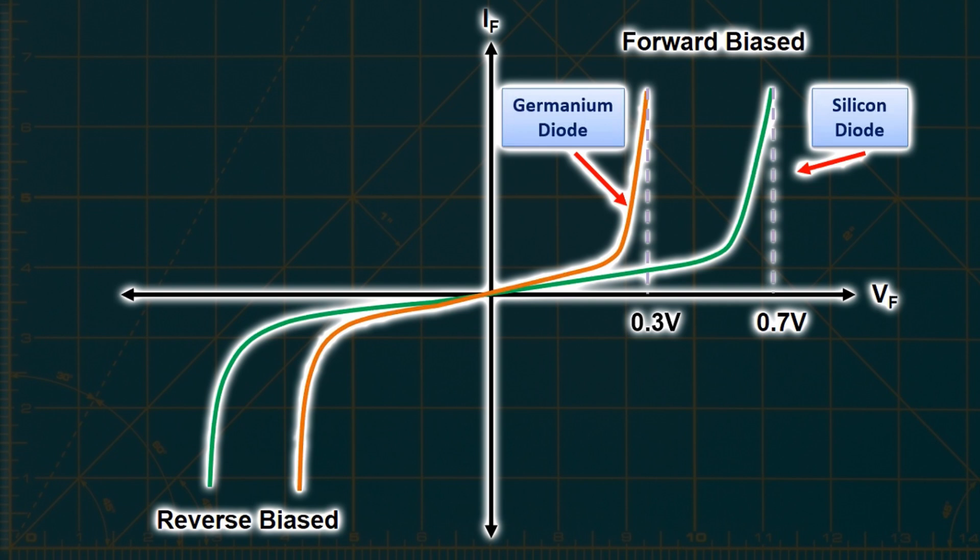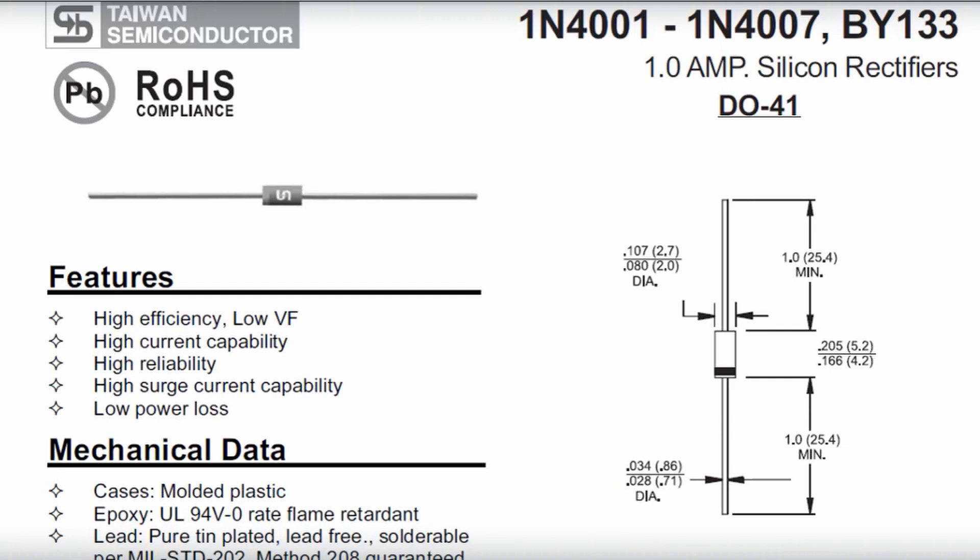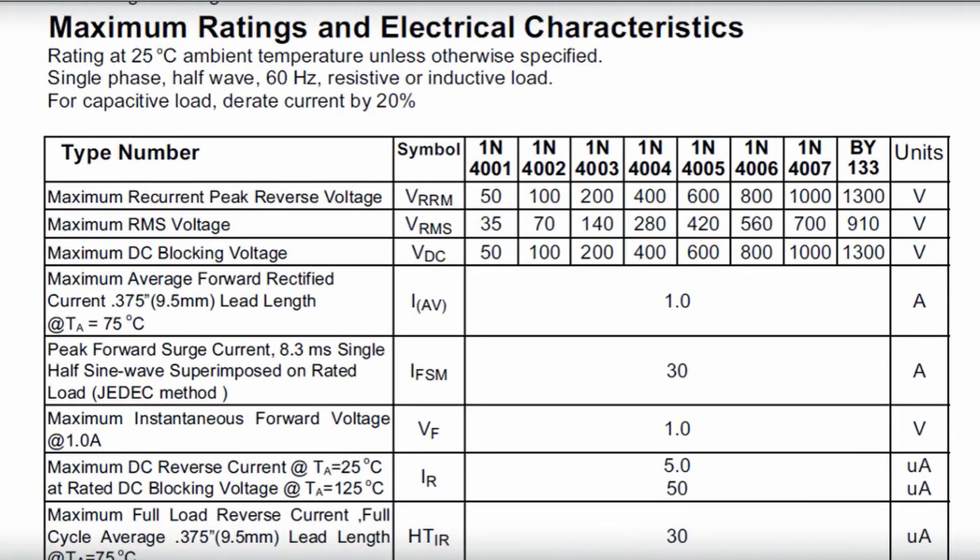Now, when a diode is connected in reverse, it's important to determine how much voltage it can withstand without allowing current to flow or causing damage. Similarly, we need to determine the maximum current it can handle. To obtain this information, we refer to the datasheet provided by the manufacturers. For example, let's consider the widely used diodes, such as 1N4001 to 1N4007. The datasheet provides details about their physical and electrical characteristics. For instance, the 1N4001 diode can withstand a maximum reverse voltage of 50 volt without damage, while the 1N4007 diode can withstand up to 1000 volt. The maximum current that all these diodes can handle is 1 A. In circuits with higher current requirements, it's necessary to choose a diode with appropriate specifications.